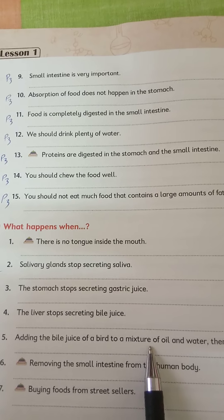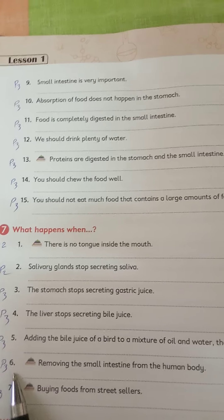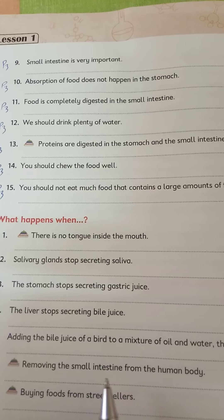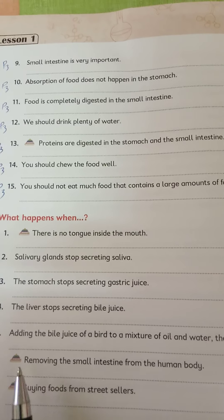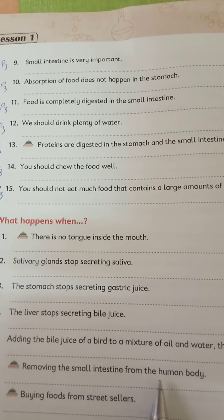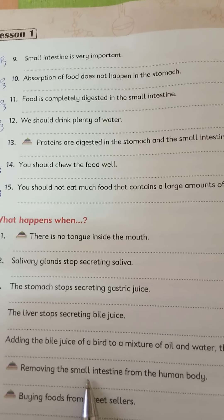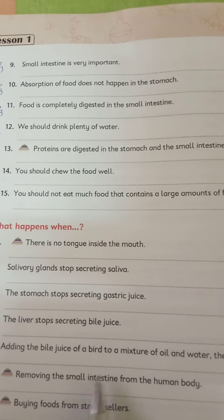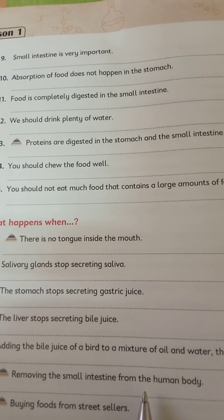Number six: removing the small intestine from the human body. What happens when removing the small intestine from the human body? The food can't be completely digested, and the absorption process can't occur.